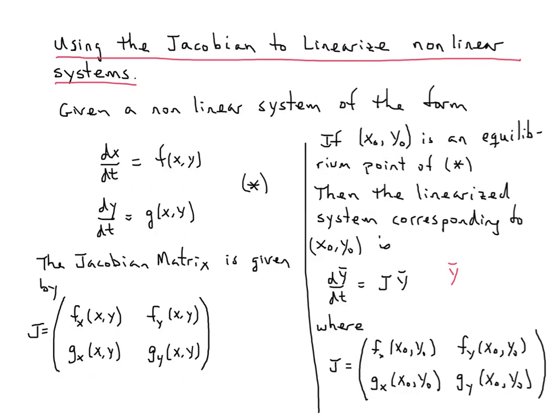Where ȳ is just the vector [x(t), y(t)], and our Jacobian is just this matrix evaluated at the equilibrium point, so f_x at the equilibrium point, f_y at the equilibrium point, and so on.